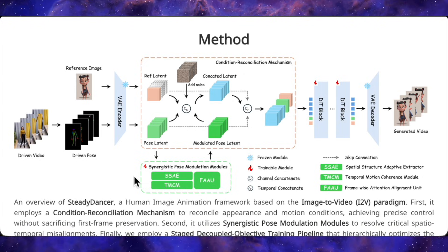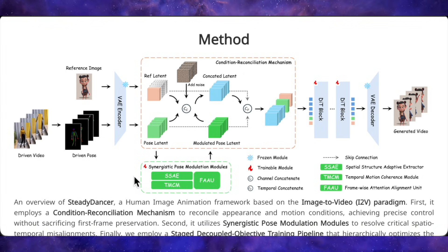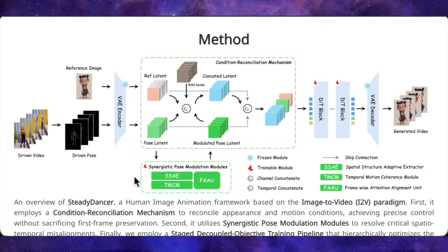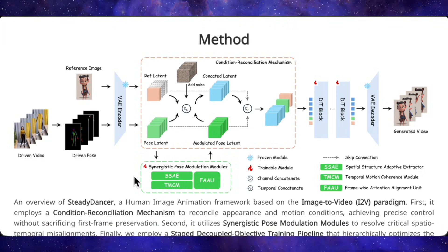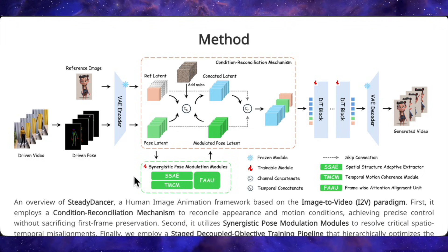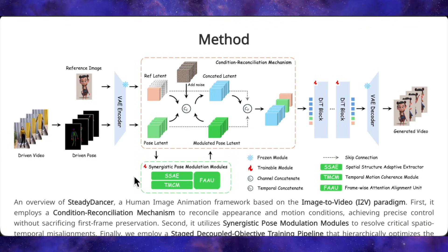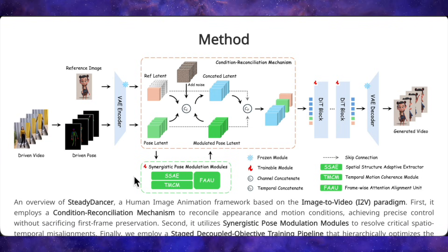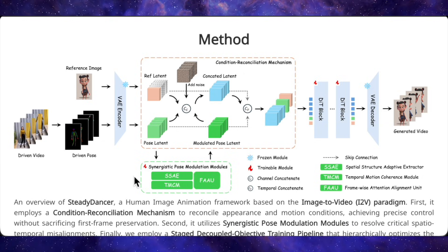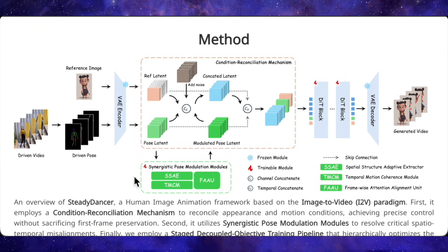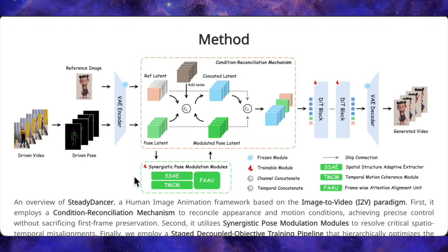They use channel-wise separation so the model can see both signals clearly, inject the pose conditioning in a lightweight way using low-rank fine-tuning so they don't accidentally destroy the pre-trained video generation quality, and then augment the input by feeding in extra copies of the first frame's image and the first frame's pose, plus richer semantic context — all of which helps the model stay anchored to that starting appearance.